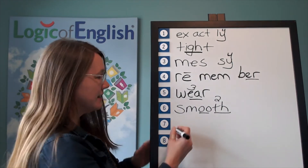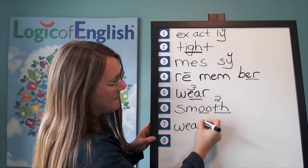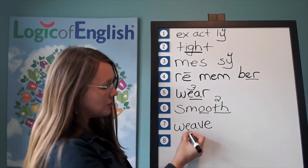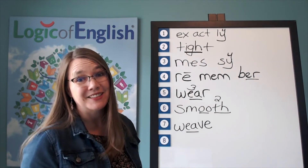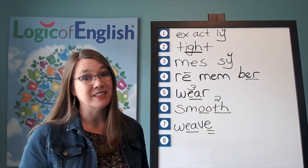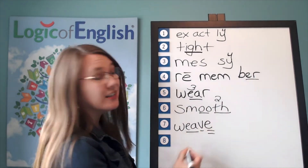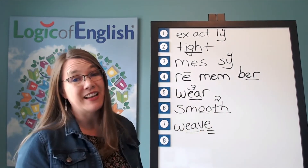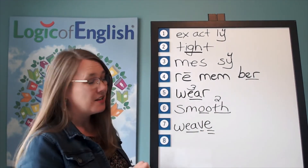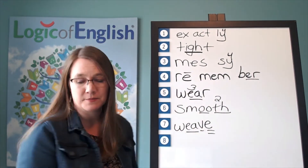Good. And help me to write it. W-E-V. Silent final E. All right. Did you use this kind of E? Good. And why do we have a silent final E in weave? English words do not end in V or U. Therefore, add an E. That's right. Let's read it. W-E-V. Weave.